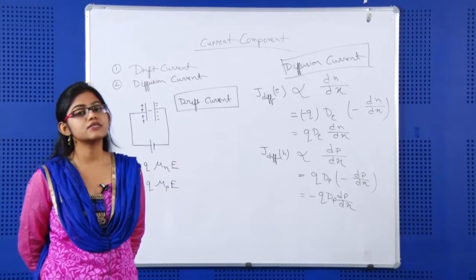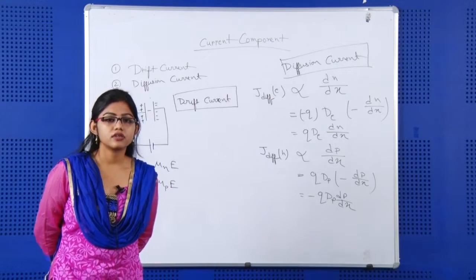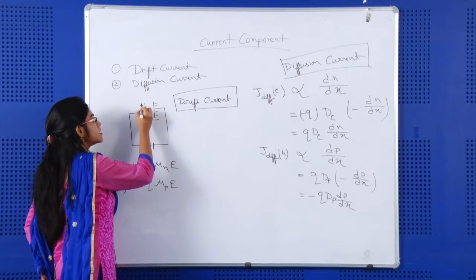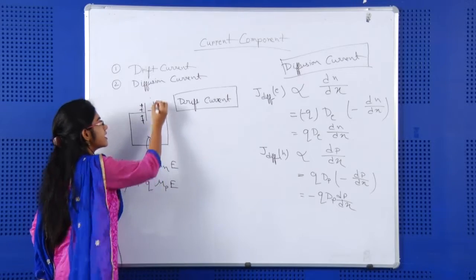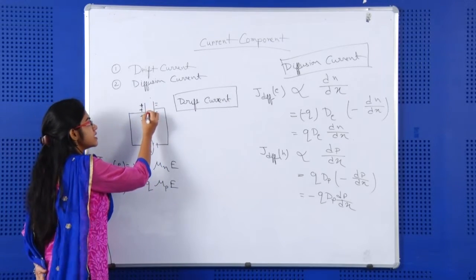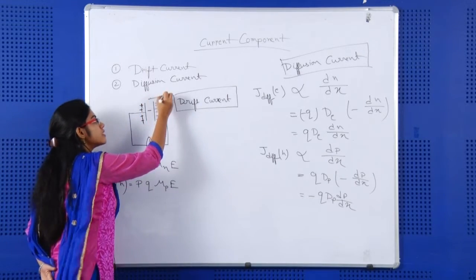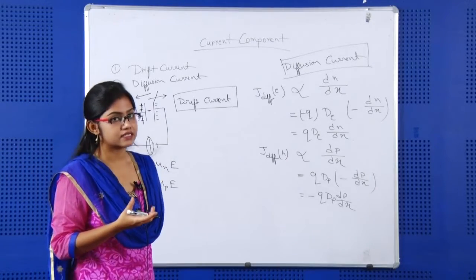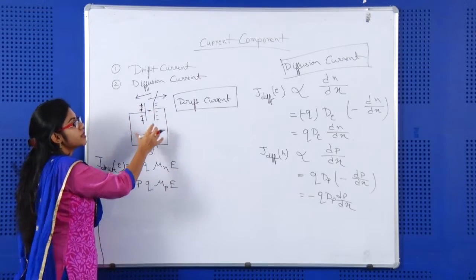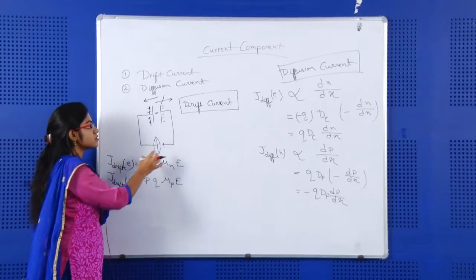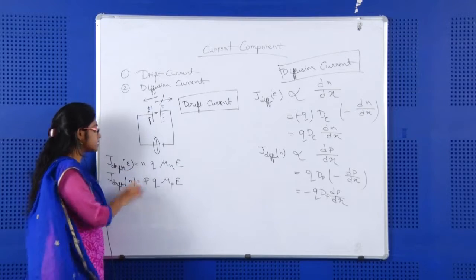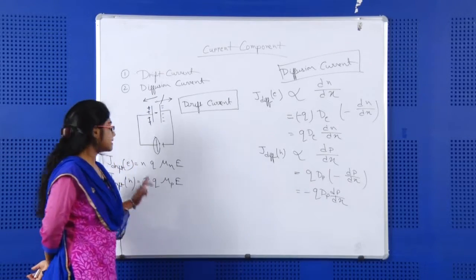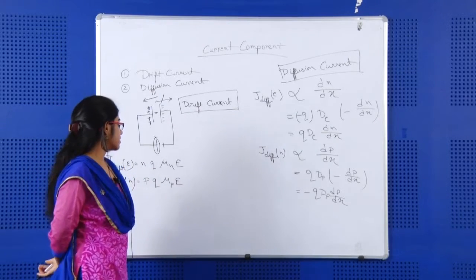What is drift current? Drift current occurs due to the polarity of the potential or the voltage given. Suppose we are giving a voltage — all the positive charge will be accumulated at the positive polarity and the negative charge will be gathered at the other side. So a free electron cannot flow in one direction; this electron should flow in the direction determined by the external potential. This current component is called the drift current component, and the drift current of electrons is given by the equation: n × q × μn × E, where n is the carrier density, q is the charge, μn is the mobility of the electron, and E is the electric field.